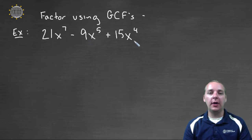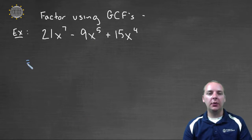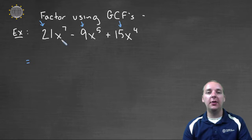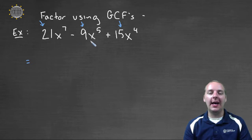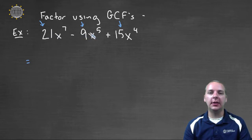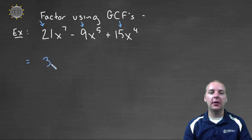Here I think we do have a GCF — there is something we can pull out of all three of these terms. I consider the coefficients first. The GCF of twenty-one, nine, and fifteen would be three, because twenty-one is three times seven, nine is three times three, and fifteen is three times five. So three is the greatest common factor between those three coefficients.